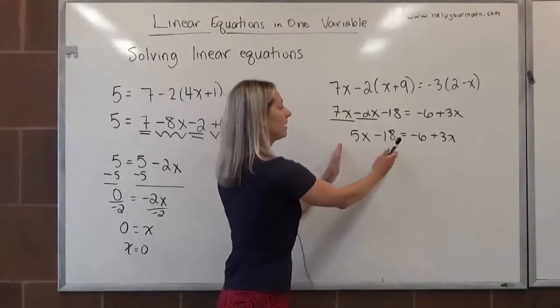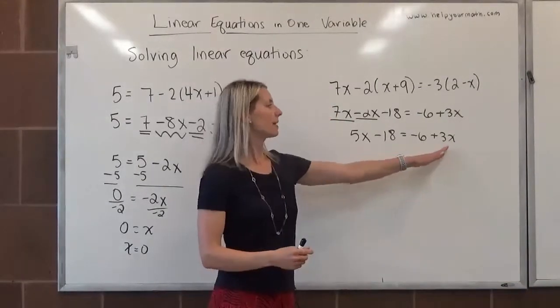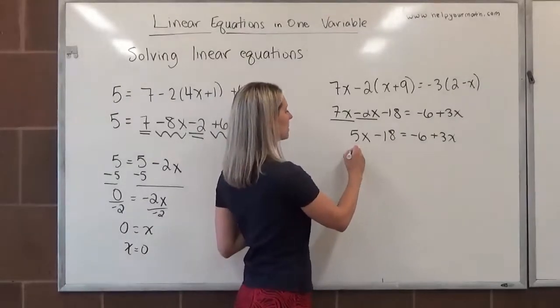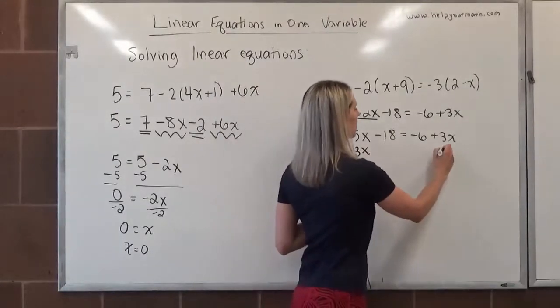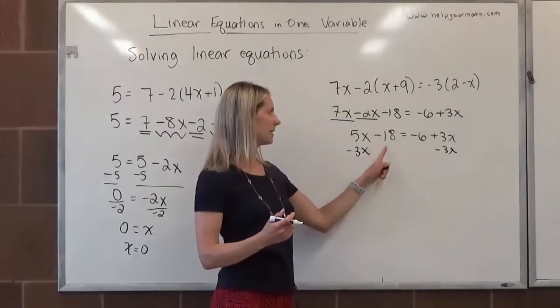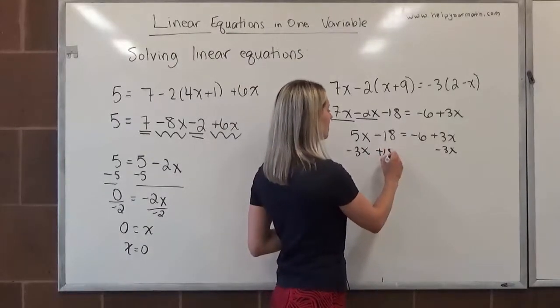Now each side cannot be further simplified. Now we want to use inverse operations. I want to get the x terms over on the left hand side, so I'm going to take away 3x from both sides. And at the same time, I might want to take the constant and move it to the right hand side. It's a minus 18, to undo minus 18, we will add 18 to both sides.